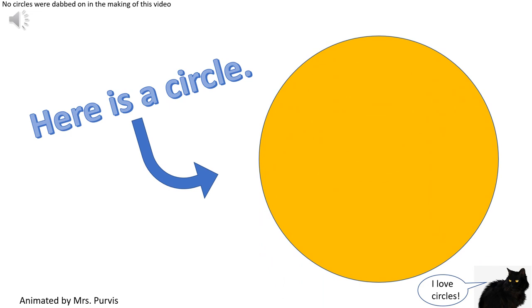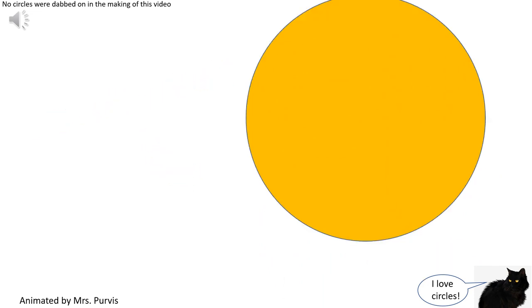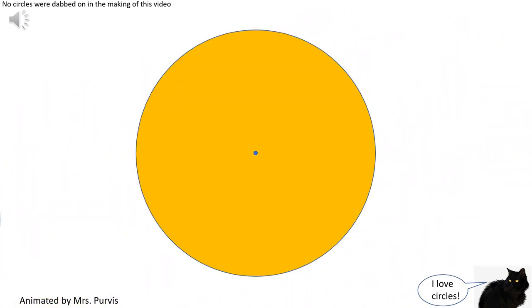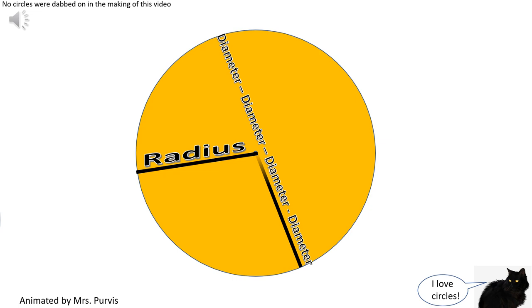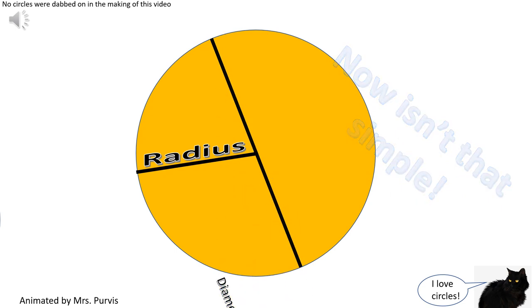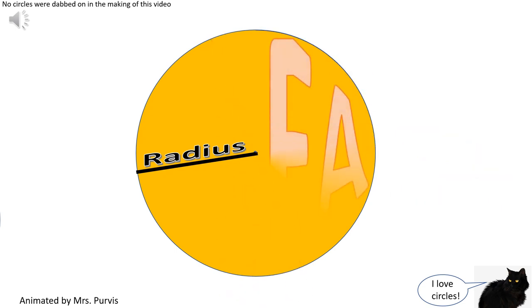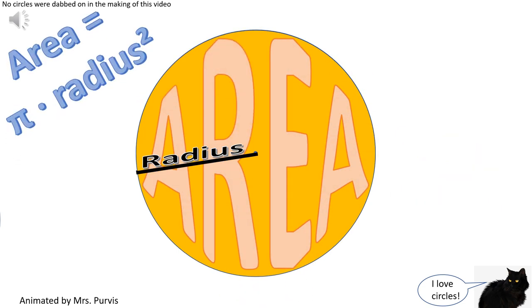Here is a circle, it knows how to get around. It has a radius from center to rim, and its diameter's a line that goes from side to side, while passing through the center. Now isn't that simple. Pi r squared sounds like area to me,